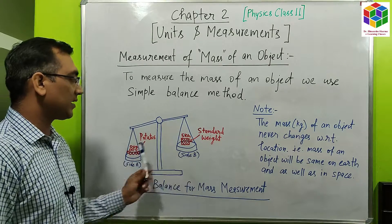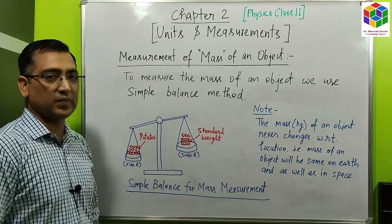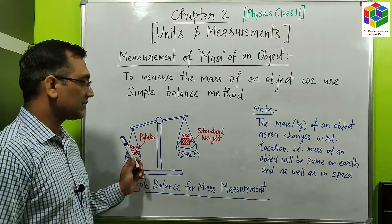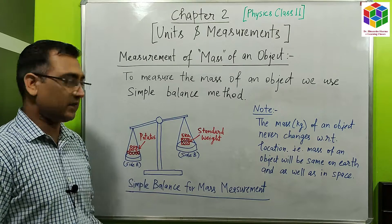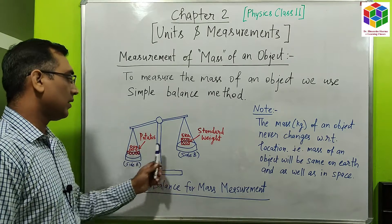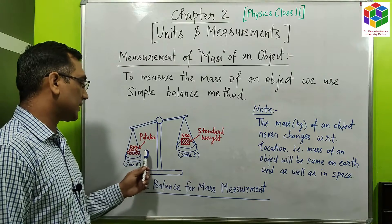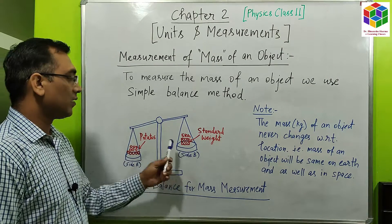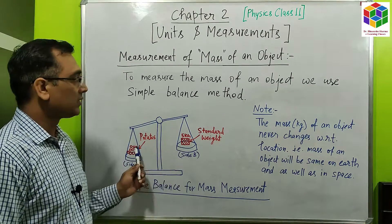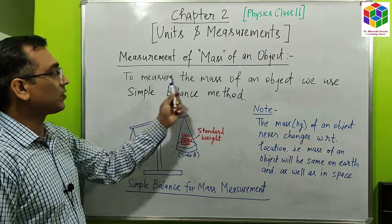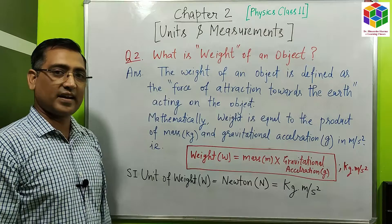The mass of an object never changes with respect to location. This simple balance measurement method is seen in our daily life when we go to the market to purchase vegetables, fruits, or any other item. So measurement of mass is a very simple method.